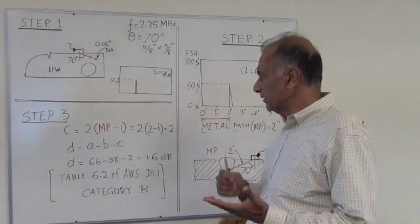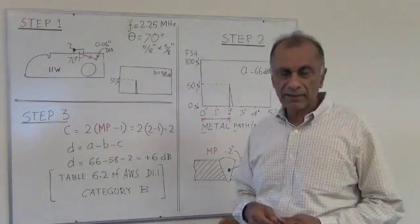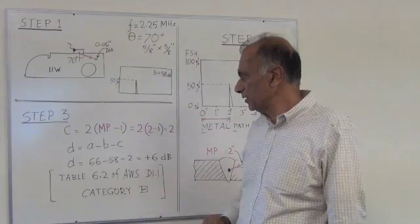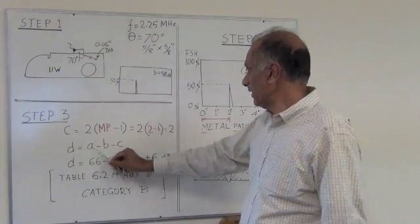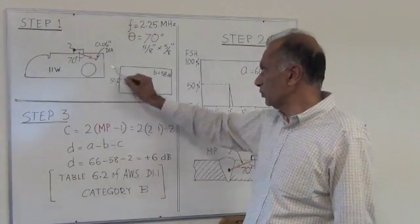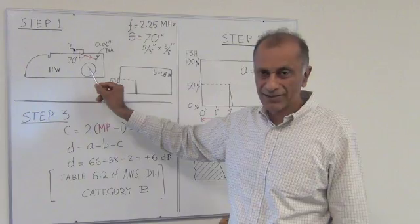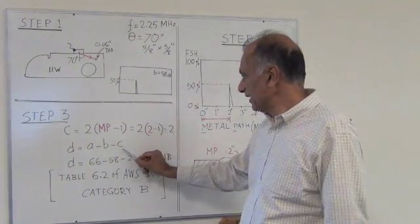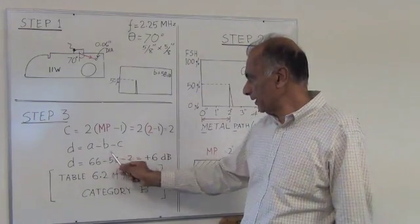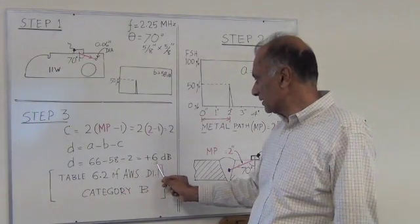Now using A, B, and C, then we calculate D, and D equals A minus B minus C. So in this case, A equals 66 dB on the indication, B equals 58 dB on the 0.06 inch hole, and C is the attenuation factor which equals 2. So A minus B minus C, which is 66 minus 58 minus 2, equals plus 6 dB.